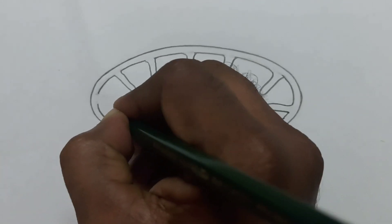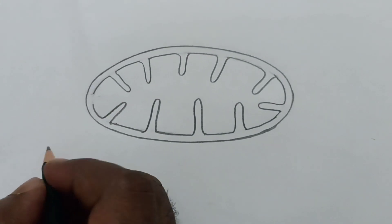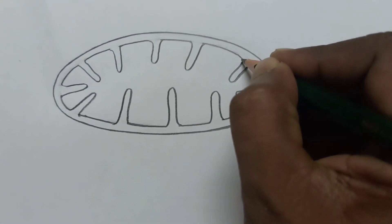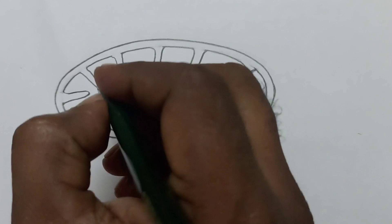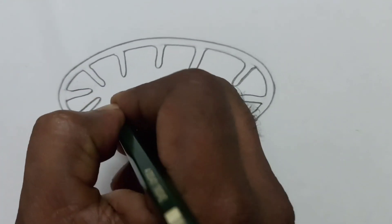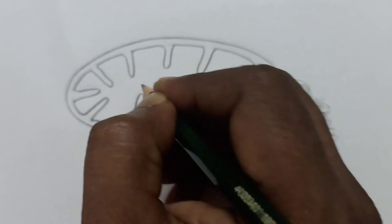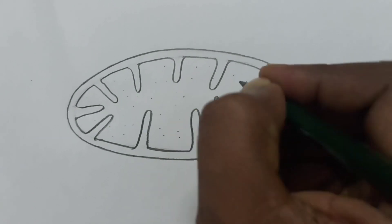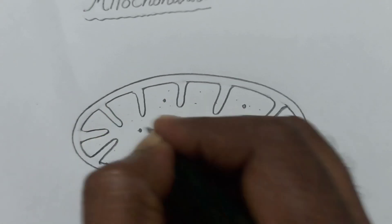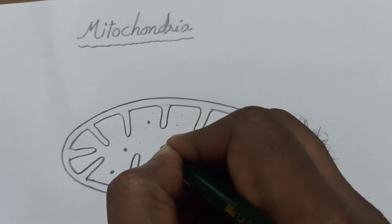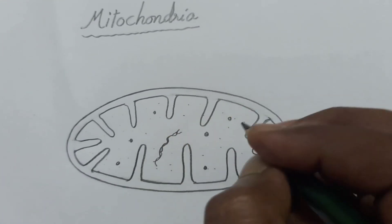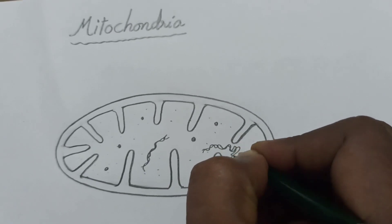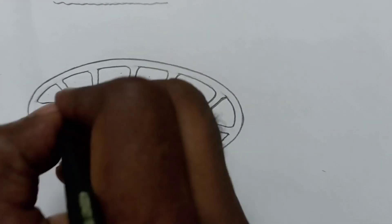You have to draw like this. Now the space between the inner membrane is known as matrix. You have to draw some dots to indicate ribosomes. These red leg structures are known as DNA. You have to draw like this.